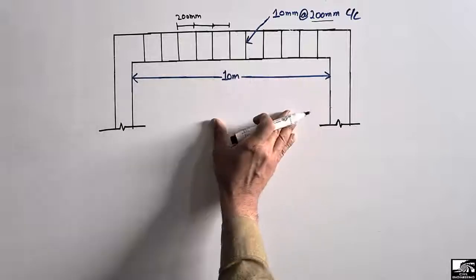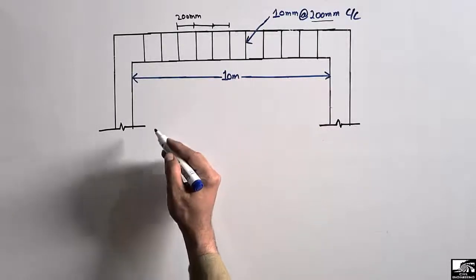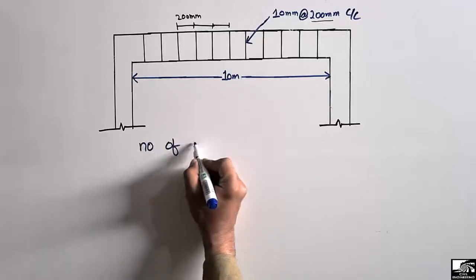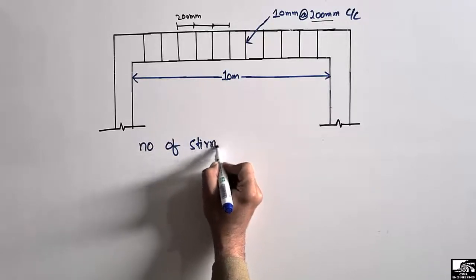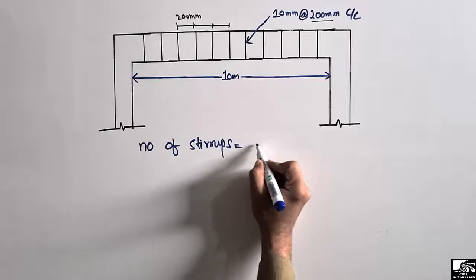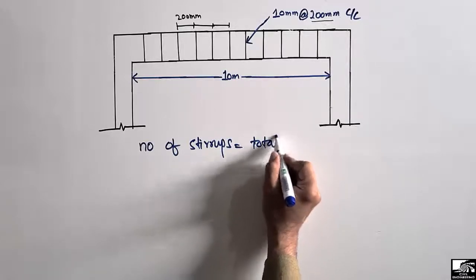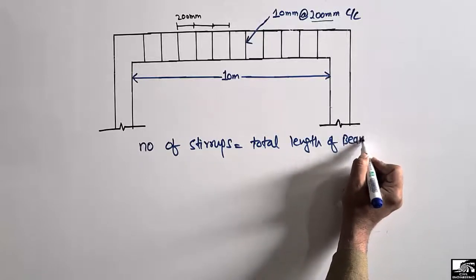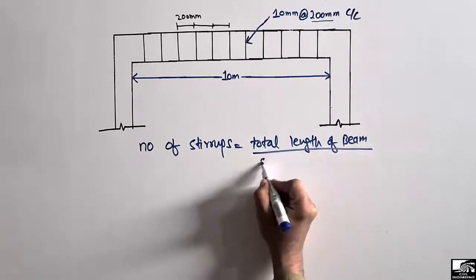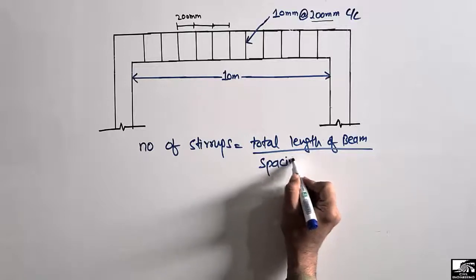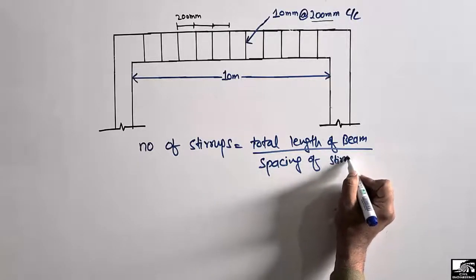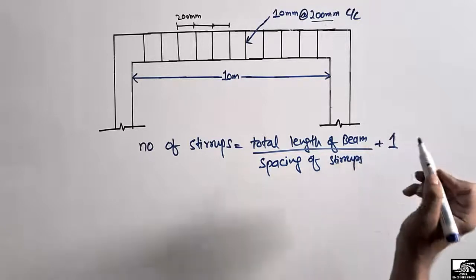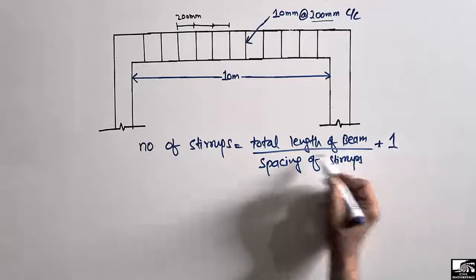Now, how can we find the number of stirrups in this beam? There is a very simple formula. The number of stirrups is equal to the total length of the beam divided by the spacing of the stirrups, plus 1. I will also show you why we add this 1 to the formula.